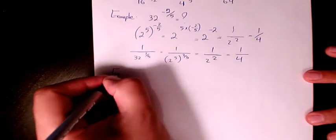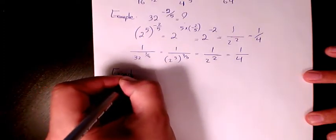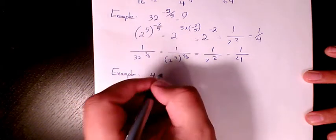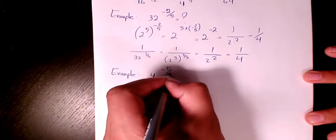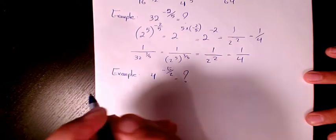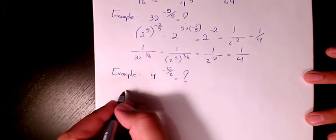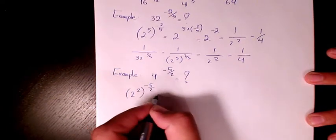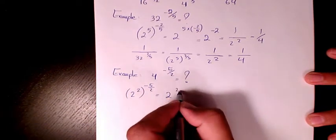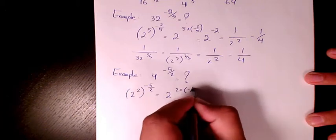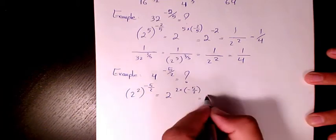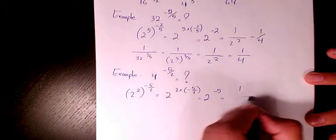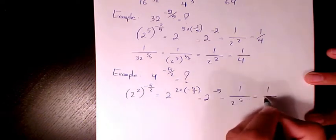Next example: 4 to the power of negative 5 over 2. Since 4 equals 2 squared, we have 2 squared to the power of negative 5 over 2, which equals 2 to the power of 2 times negative 5 over 2. The 2s cancel, giving 2 to the power of negative 5, which is 1 over 2 to the power of 5, or 1 over 32.